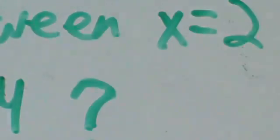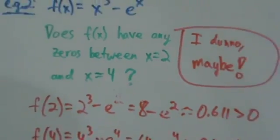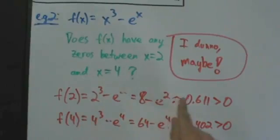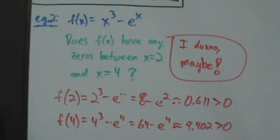So in this case no, there aren't any zeros. But just want to point out again that the Intermediate Value Theorem only tells us nothing actually in this case because f(2) and f(4) are both positive. The Intermediate Value Theorem gives us no conclusion, so we have to try something else like graphing it or some other technique. But anyway, that's example two.